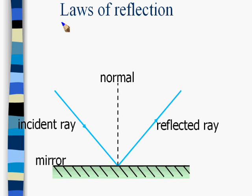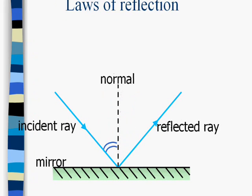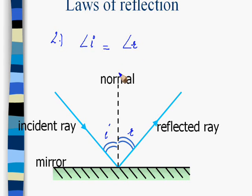Laws of reflection: The first law states that the incident ray, the reflected ray, and the normal all lie in the same plane at the point of incidence. The second law is about the angles — the angle of incidence is always equal to the angle of reflection. Wherever reflection takes place, these two laws will be obeyed.